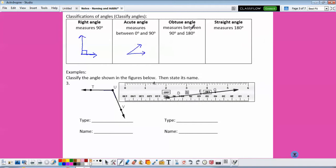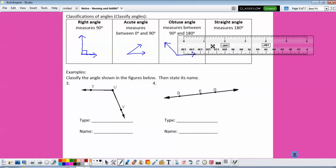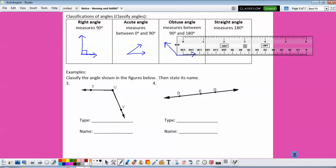An obtuse angle measures between 90 degrees and 180 degrees. Something like that. If I put my ruler in the corner, I could see that this extended farther than my corner, so I know it's more than 90.